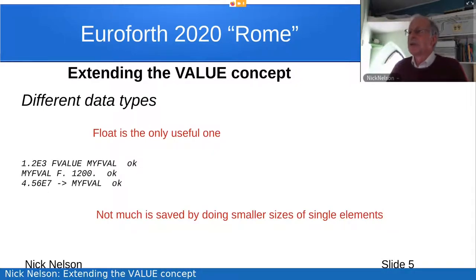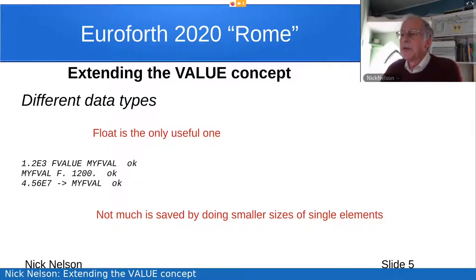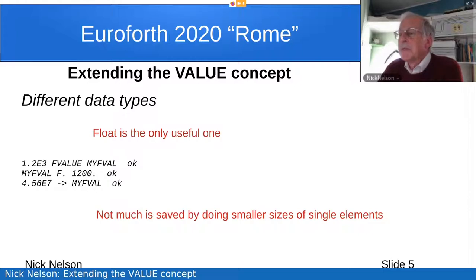But it's when you start to extend the value concept that you begin to see the real benefits. The first thing is different data types. Really, float is the only truly useful extra data type. Some versions of Forth appear to support F value and others don't, but it's relatively easy to implement even if not already supported. So now, lo and behold, your invocation of a value returns not a cell but the floating point value. And you can put a floating point value into a value using exactly the same 'to' statement as before — so there's a nice uniformity there.